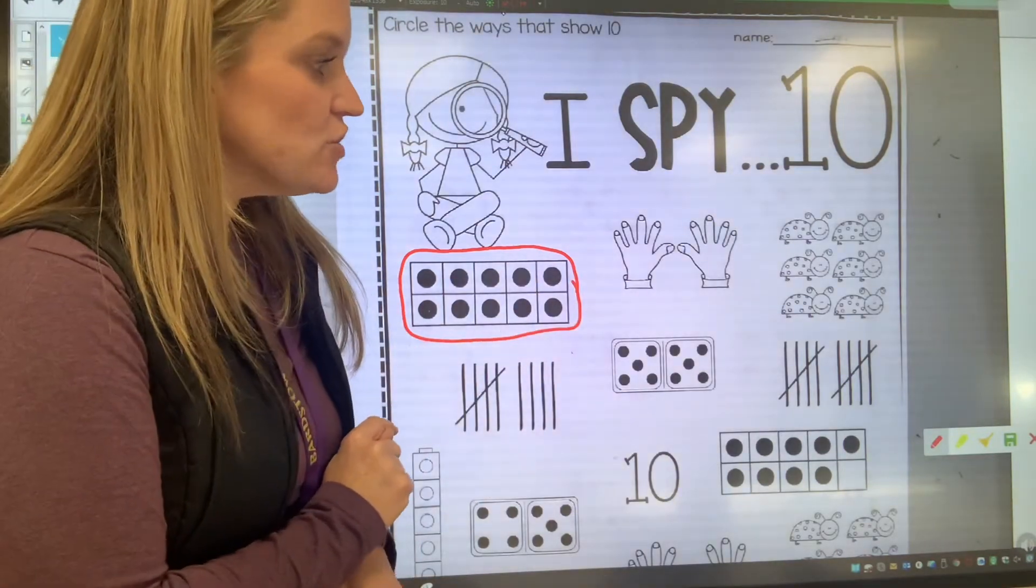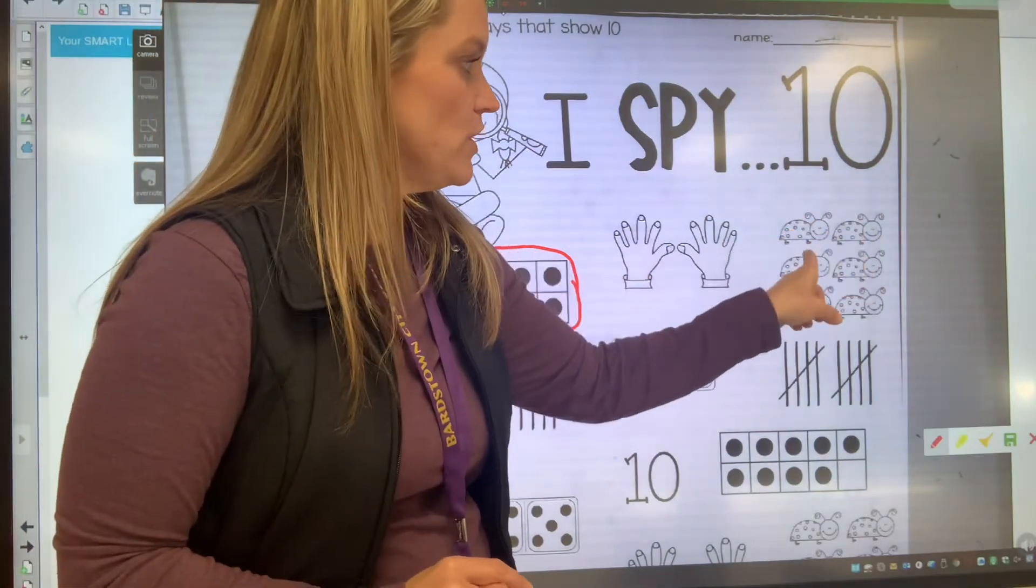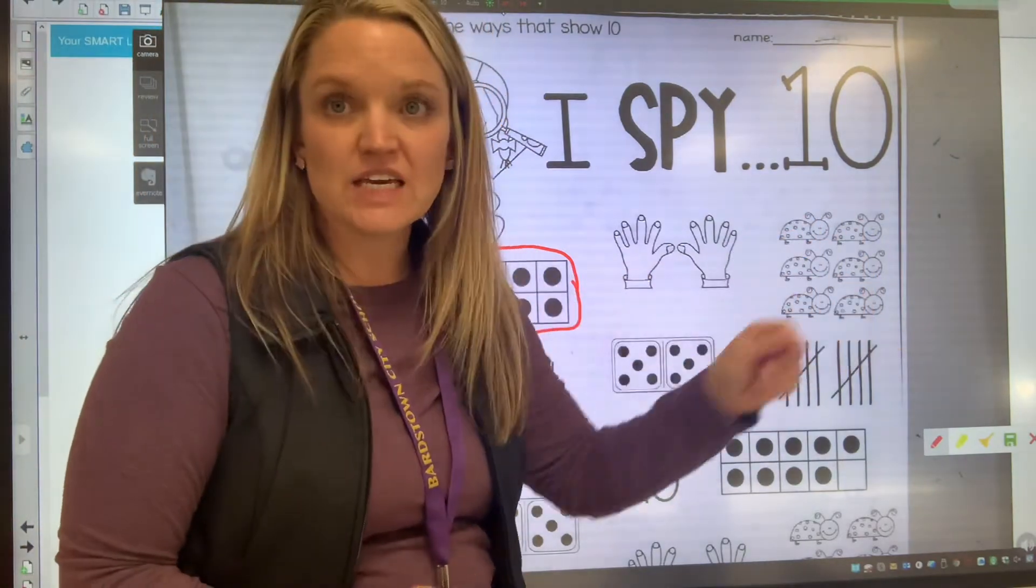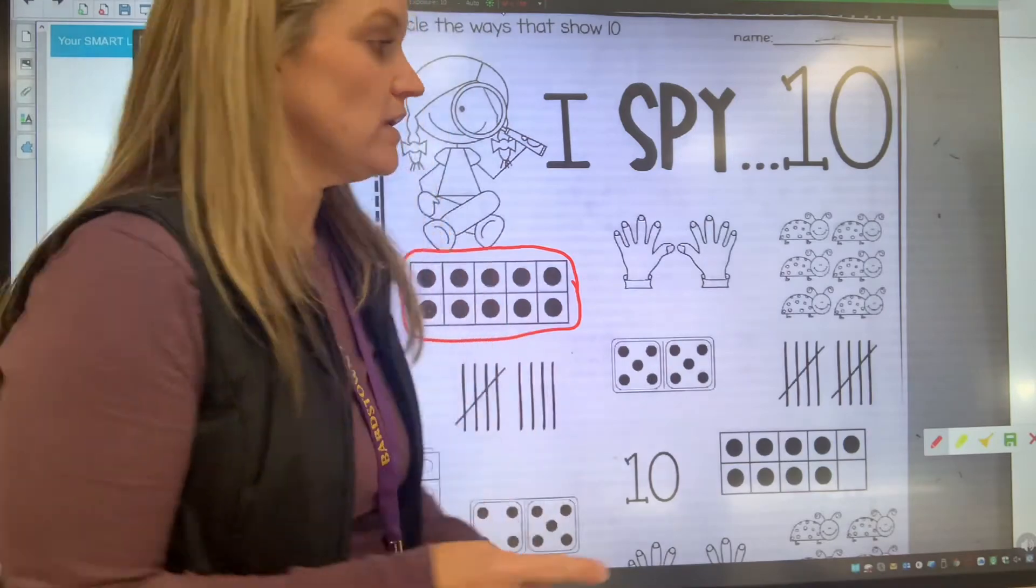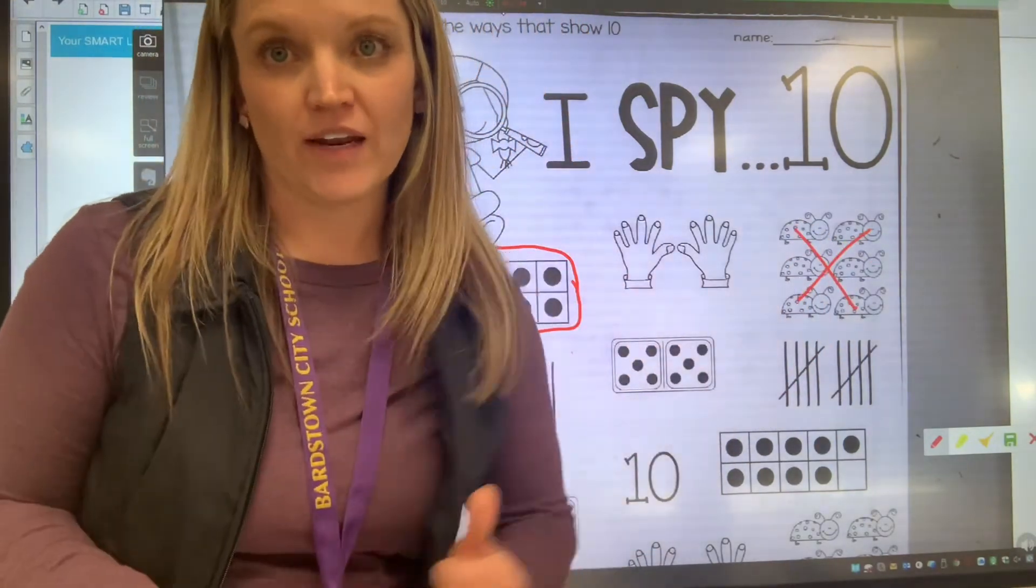If it does not show 10 let's take a look at these bugs. One, two, three, four, five, six. It shows six it does not show 10. We want to put an X just on top of the items.